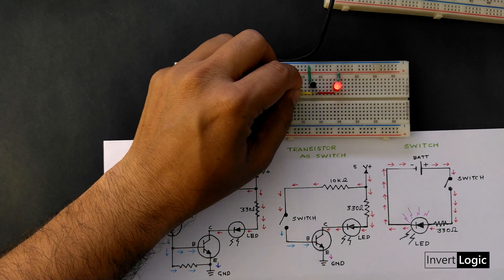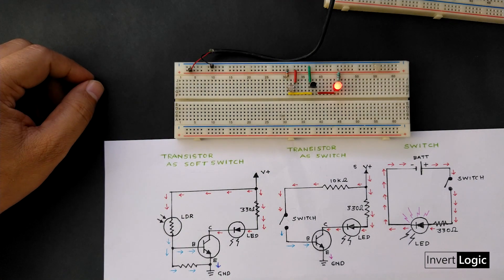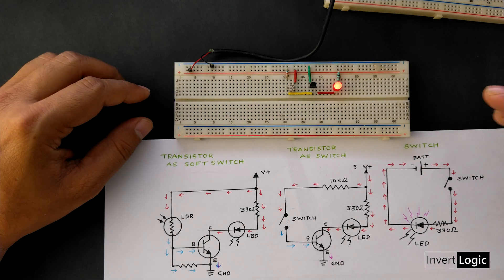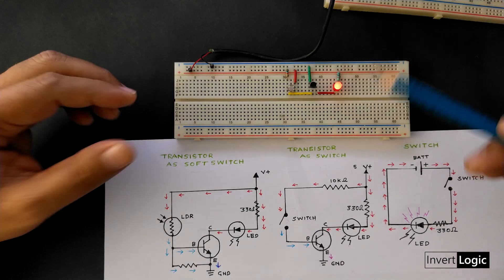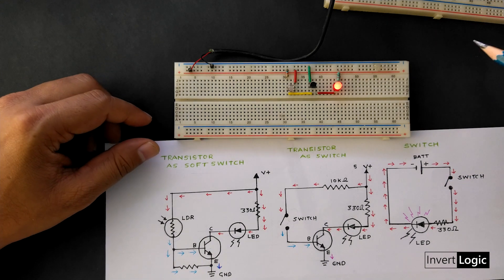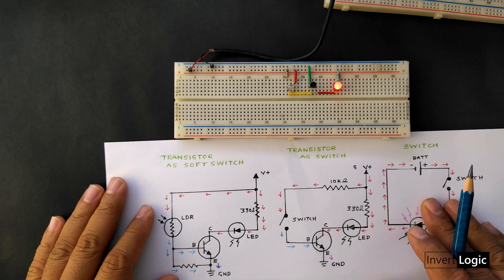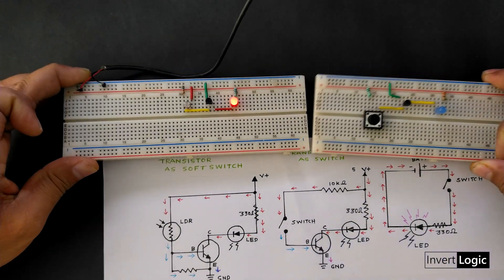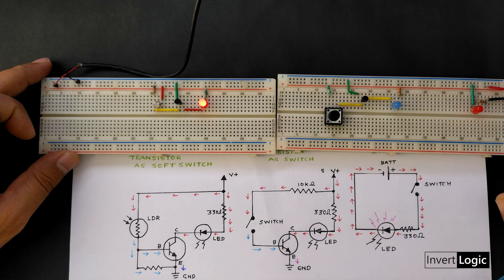So in this case, the LDR is triggering the transistor switch. This can be useful in case where you want to turn on or off something based on the light conditions. So this is just one example of how we can generate a signal for the transistor. And there are many many other ways we can do this.